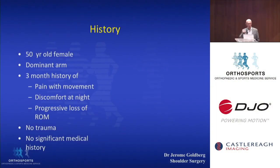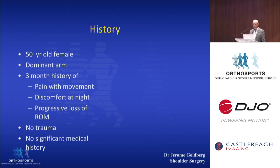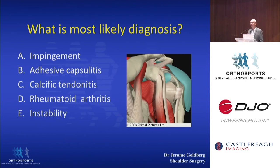The first case: a 50-year-old female, dominant arm pain, a three-month history, pain with movement, discomfort at night, and more specifically a progressive loss of motion. There's no history of trauma and no significant medical history. When this patient comes to your office, by the time you've got a history, you're thinking about what diagnosis this is. Who thinks this might be impingement?